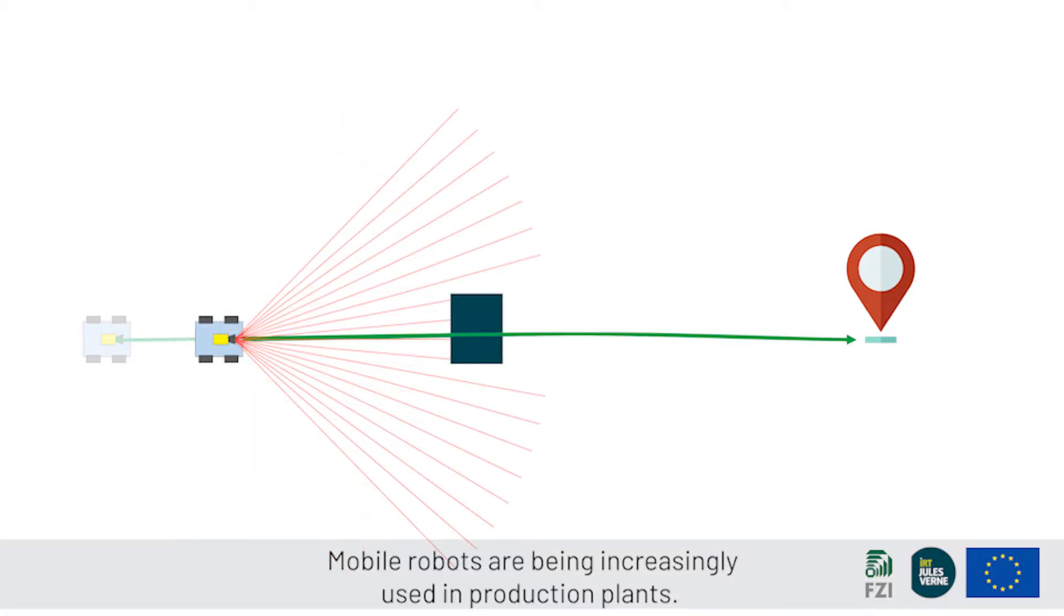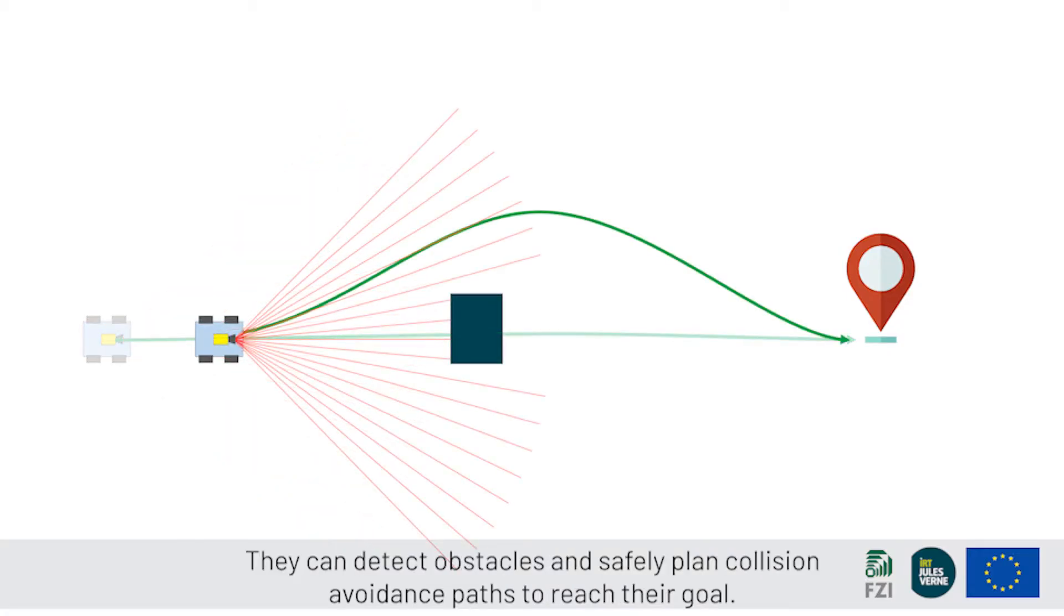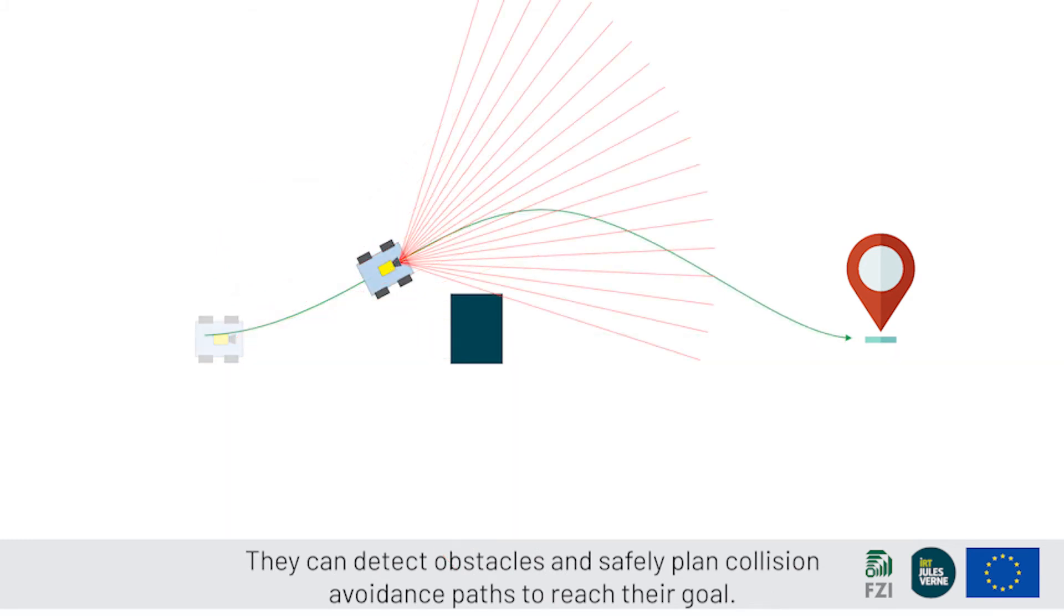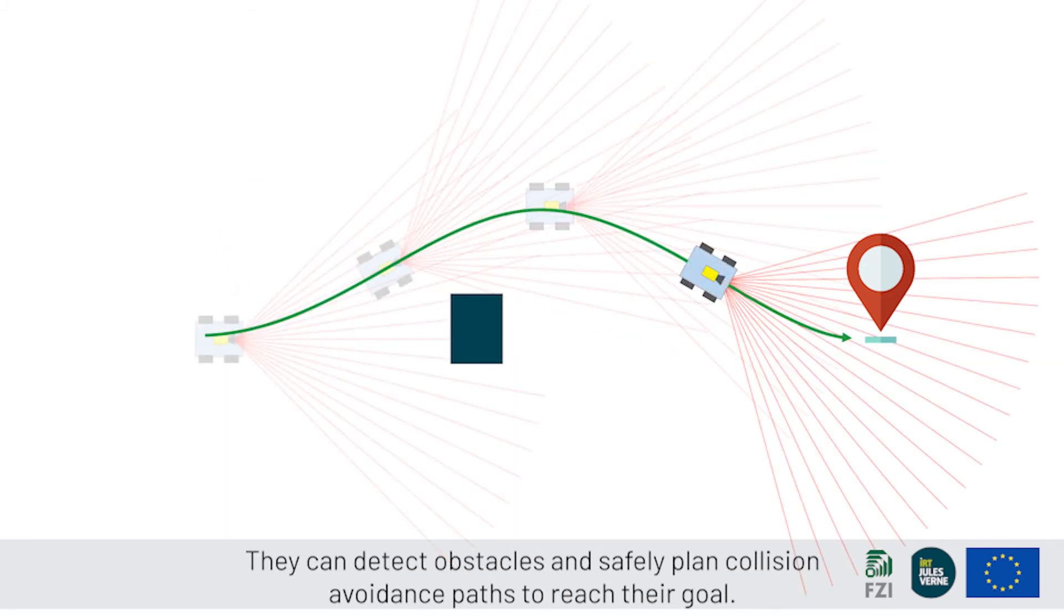Mobile robots are being used increasingly in production plans. They can detect obstacles and plan safe collision avoidant paths to reach their goal.